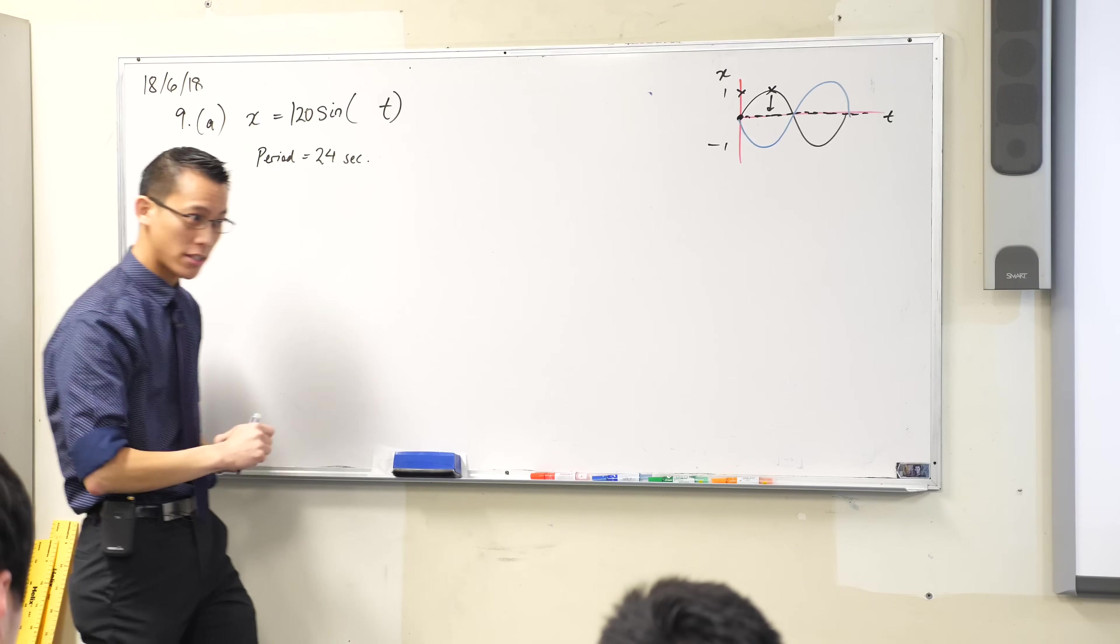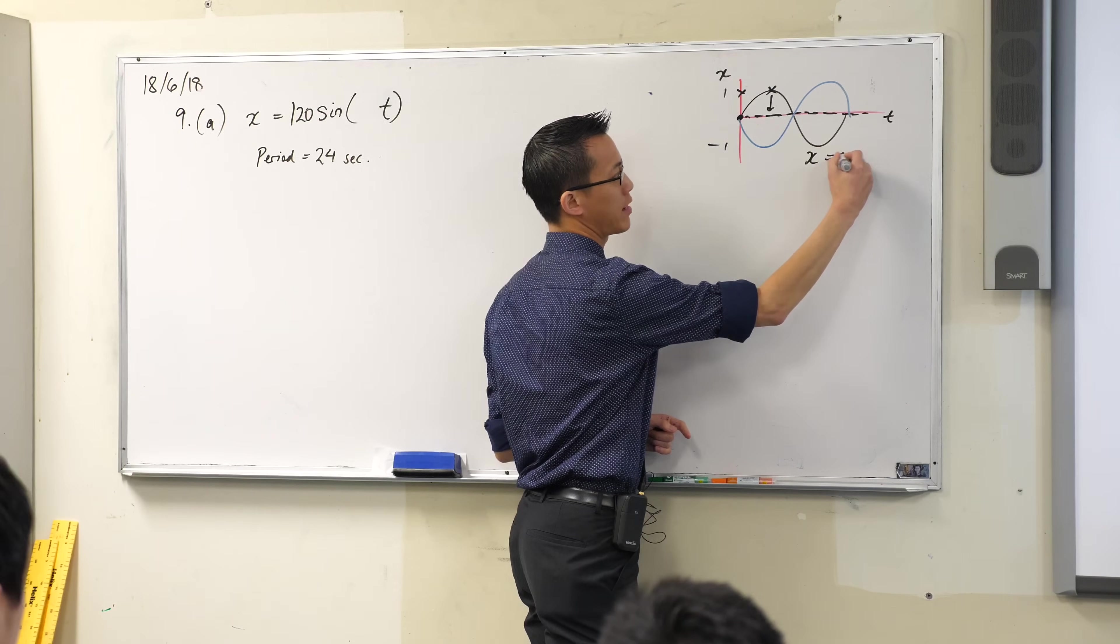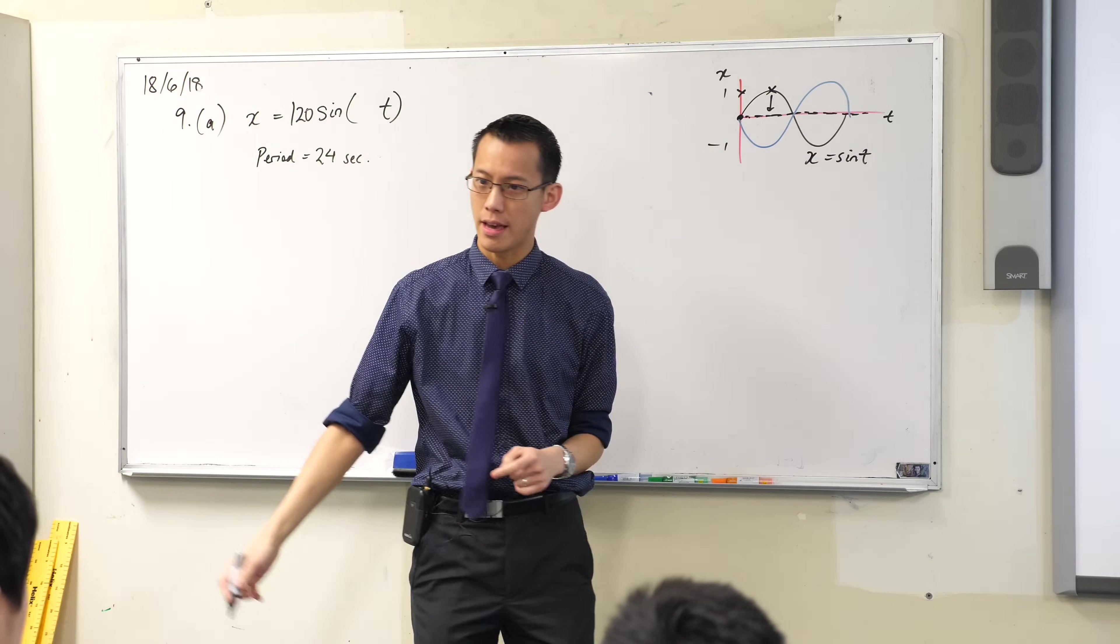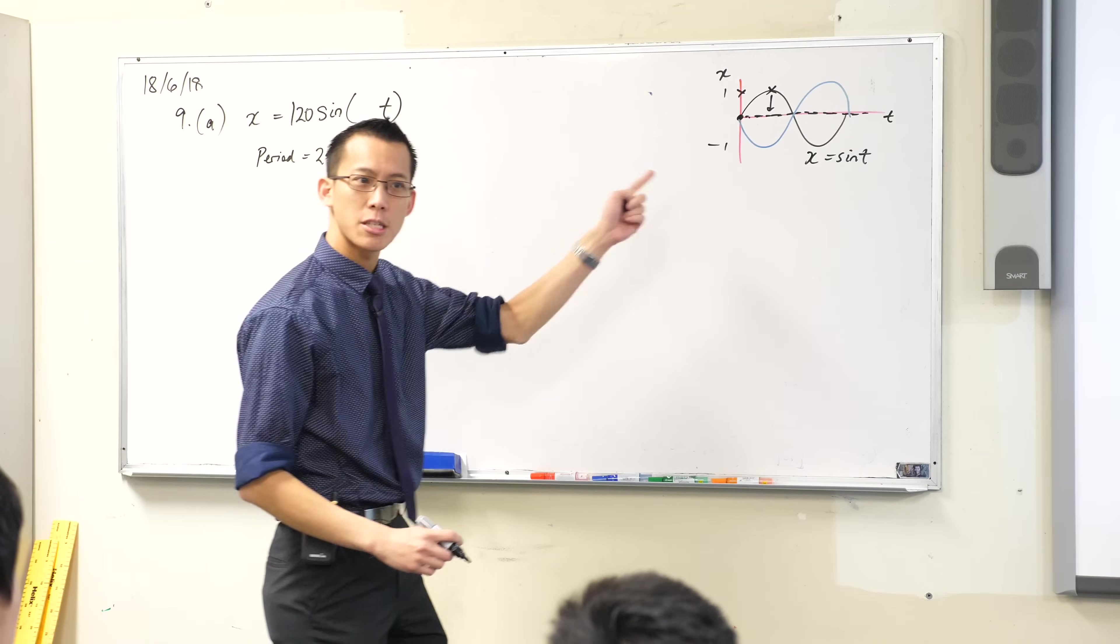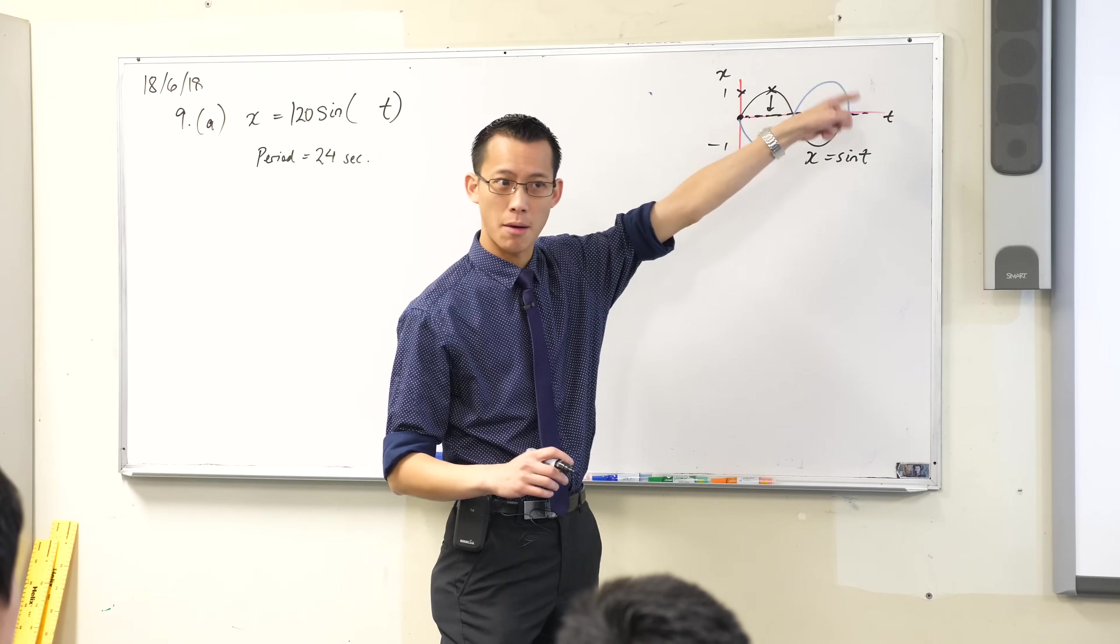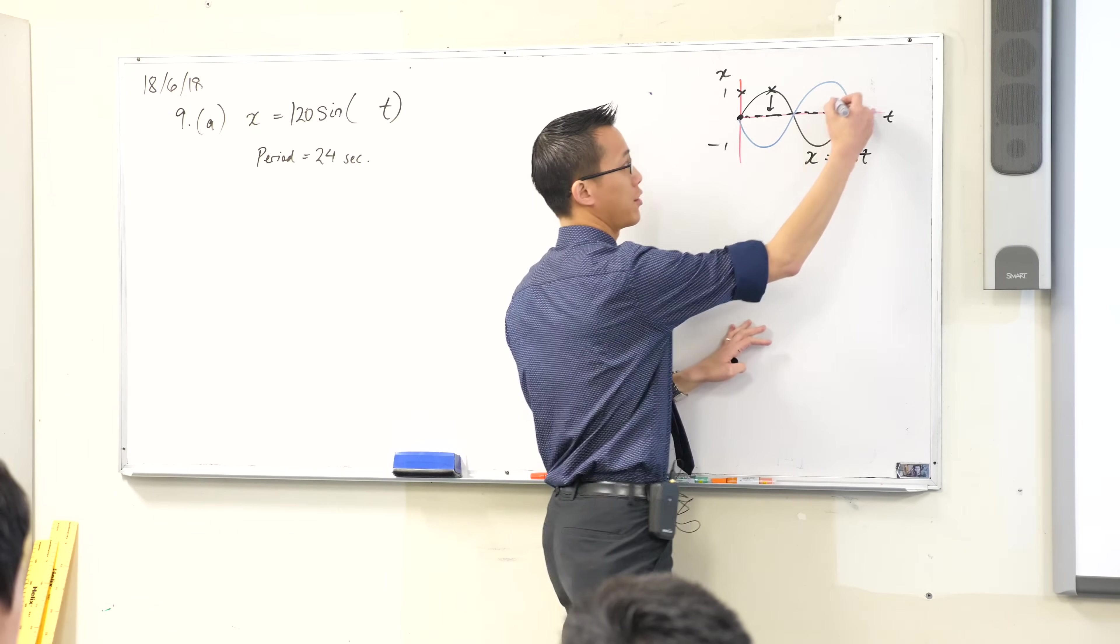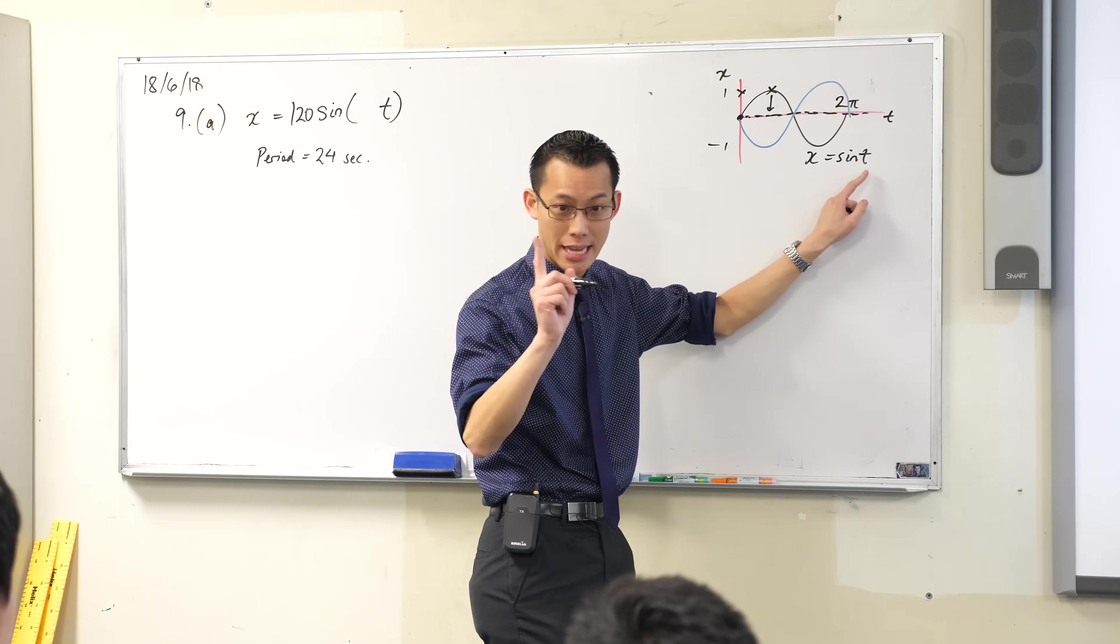So how do I work this out if the period is 24 seconds? Think back to your knowledge of graphing, right? If I just for example had a regular curve like this, x equals sine t, no weird coefficients or anything like that, what would its period be? How long does sine normally take to come back to the beginning? 2π, very good. Okay, so in this case what I've got is sine of 1t.